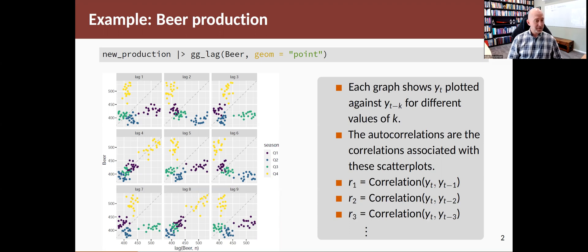The correlations associated with these scatter plots are called autocorrelations. The name simply comes from the fact that auto means self, so it's self-correlated, how something is related to itself. So the correlation associated with the first of these graphs up here is called R1, and then the second one is R2, and R3 is associated with the third plot, and so on. So it gives us a series of correlations related to how values of a time series are correlated with each other.